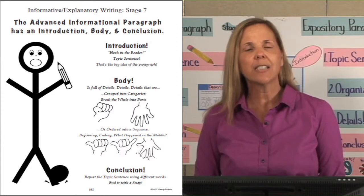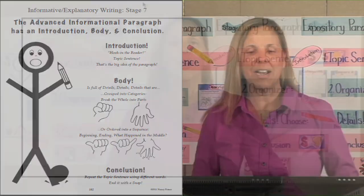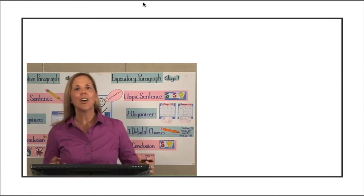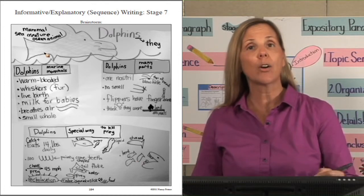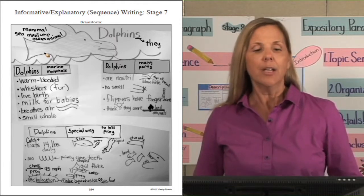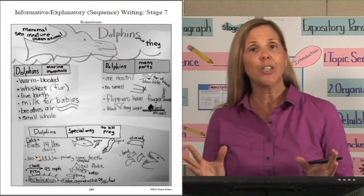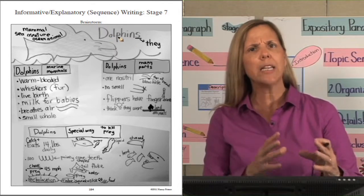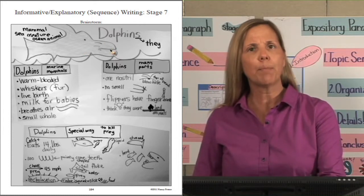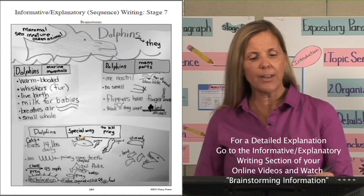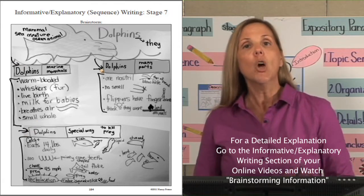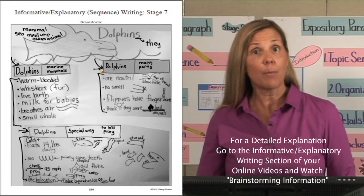Let's use this chant to walk through all the steps in writing an advanced paragraph. Please take out an 8.5 by 11 blank sheet of paper to follow our steps for the informative explanatory Stage 7 organizer. Let's look at our brainstorm page to decide what we'll be writing about. This brainstorm is from an entire oceanography unit of study in science. Students had studied a lot of information about dolphins and were ready to write many different paragraphs about them.